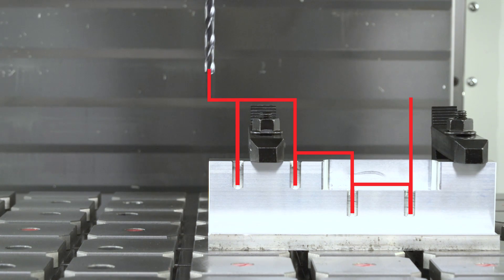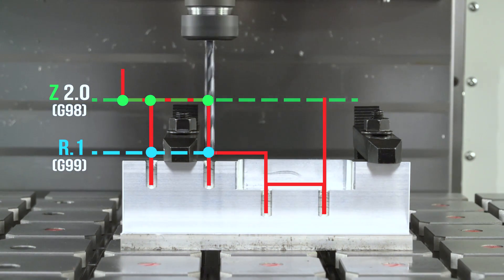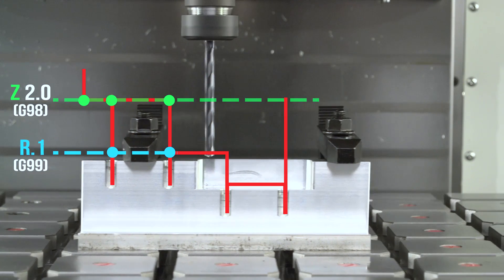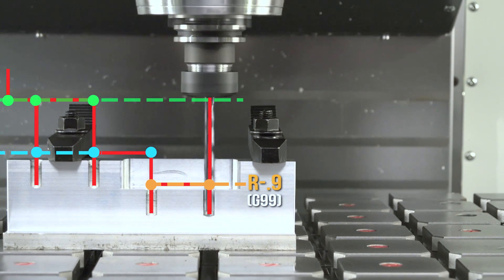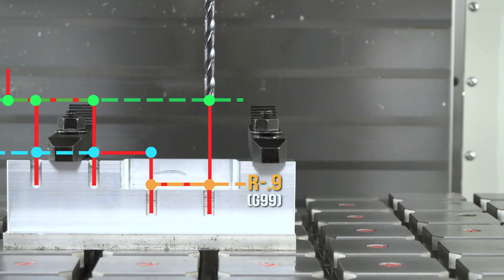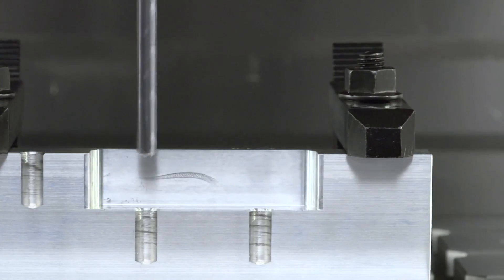So we're using a G98 with a Z start point of two inches so it pops over that first clamp. And then we use an R plane of minus 0.9 for those third and fourth holes so we avoid cutting air. Well, we did it. Our tools are now hopping up and over clamps and diving efficiently into pockets.